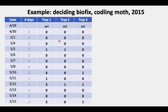Here's an example deciding biofix. These are numbers from the year 2015. What is shown is a chart where we have the date that we checked the trap, the number of days since the previous check, and then the number in trap 1, trap 2, trap 3. In this year, we set them up on the 29th of April. We checked a day later, and they were all zeros. On the 4th of May, we had waited three days since the last check, and they were still all zeros.